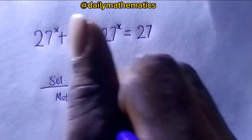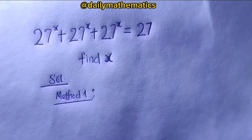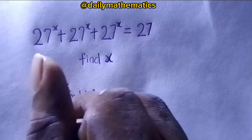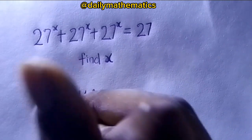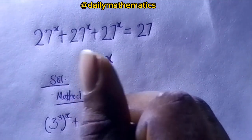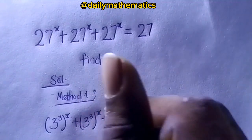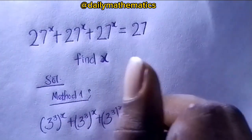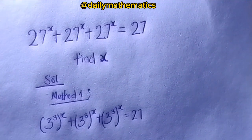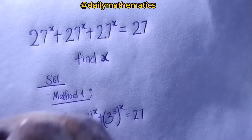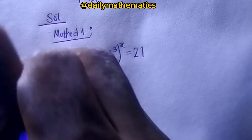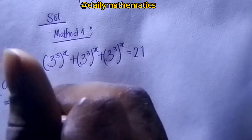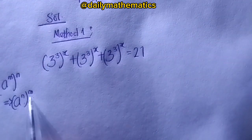Method one: we know 27 is 3 raised to the power of 3. So we rewrite each term as 3 raised to the power of 3, raised to the power of x. That gives us 3³ˣ + 3³ˣ + 3³ˣ equals 27. Now recall the law: a raised to the power of m raised to the power of n equals a raised to the power of m times n — we can switch the powers.